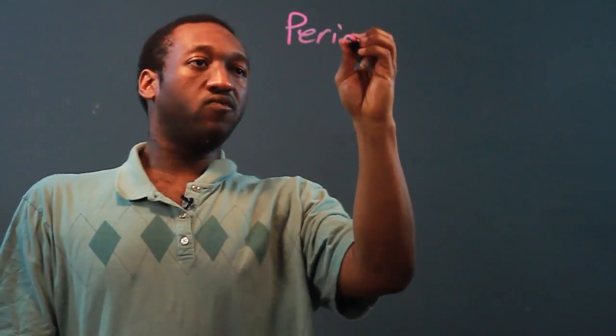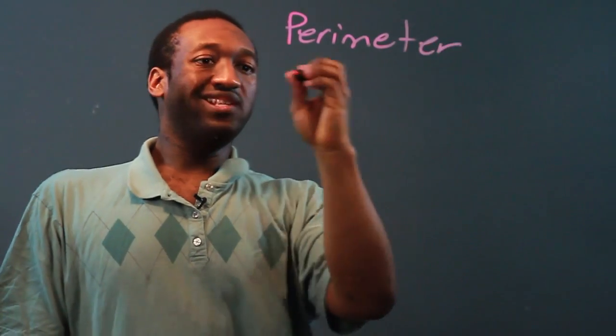Now, for perimeter and area word problems, we want to look for a couple of key words. Perimeter—look for problems that talk about distance around.